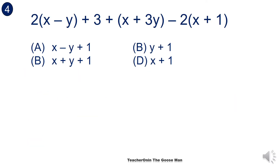Let's consider the next example. I have this expression, and what I will do is simply distribute the 2. So 2 times x gives 2x, and 2 times negative y gives negative 2y, then simply add 3. Since the expression x plus y has a positive operation outside, I'll simply copy x plus 3y.